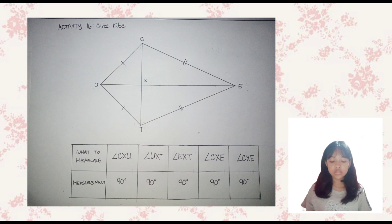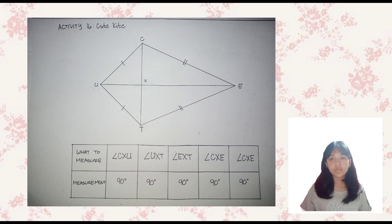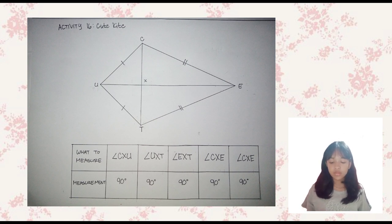As you can see on the illustration shown, all four angles are right angles, measured as 90 degrees. Angle CXU is 90°, angle UXD is 90°, angle EXD is 90°, and angle CXE is 90°. Do the diagonals have the same length? No — one diagonal is longer than the other. Which diagonal bisects the other one? It is the longer diagonal that bisects the shorter one.